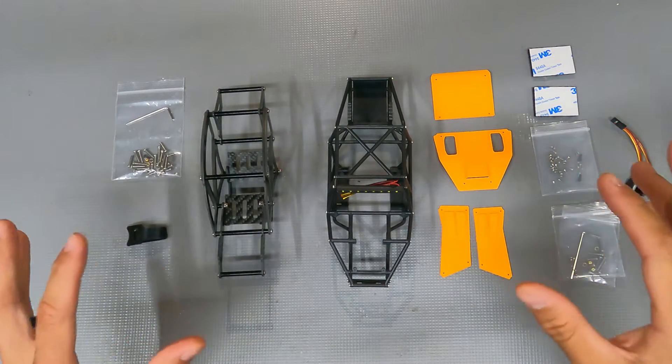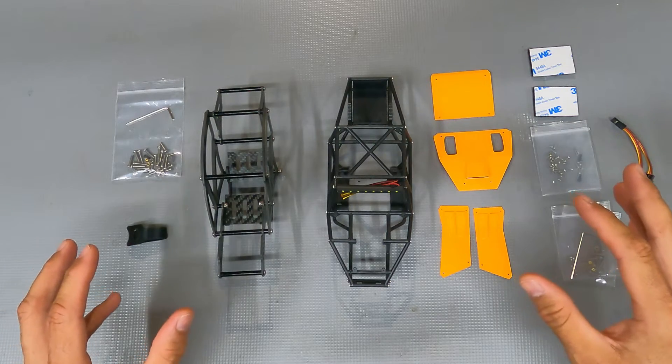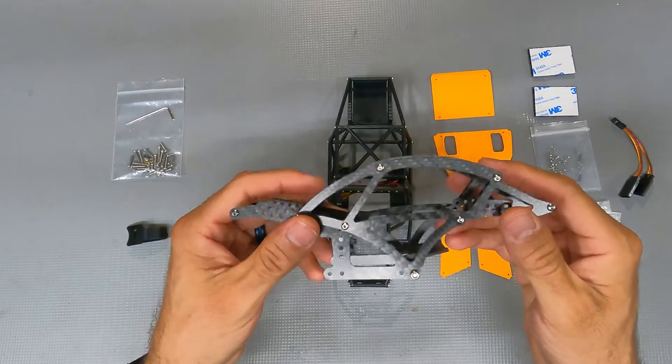So let's take an up close look at the two full chassis that you can buy for your Traxxas TRX4M from Injora. So we're going to start off with the Kangaroo.